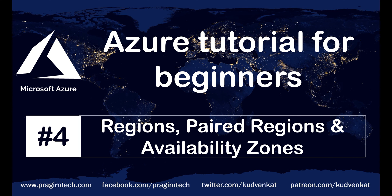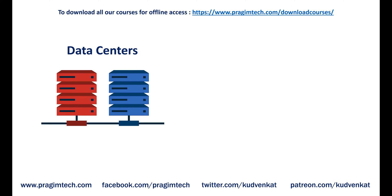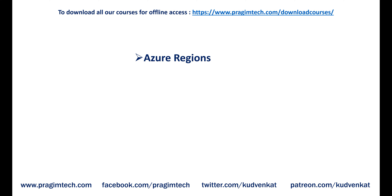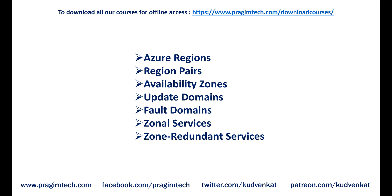This is part 4 of the Azure tutorial. In our previous two videos, we discussed Azure data centers and geographies. In this video, we'll discuss Azure regions, region pairs, availability zones, update domains, fault domains, and zonal and zone redundant services. There's a lot of ground to cover, so let's get cracking.